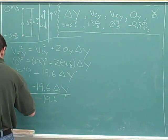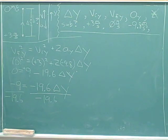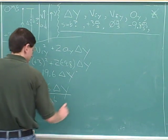And then we have to divide by negative 19.6 on the left-hand side as well. Now the negative 19.6 is cancelled.